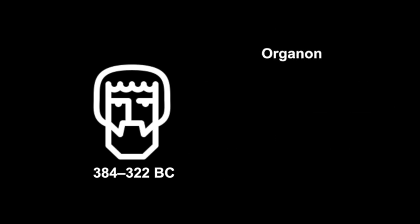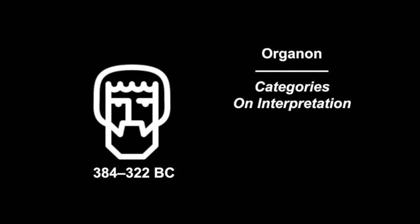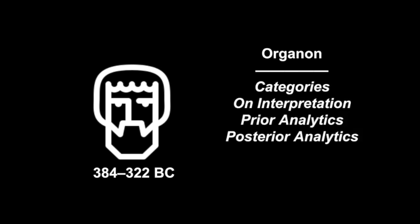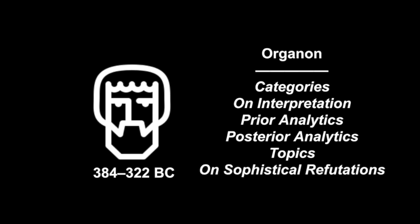The Organon is a collection of Aristotle's works that launch the field of logic, and it consists of six works. It starts off with the Categories, then On Interpretation, Prior Analytics, Posterior Analytics, Topics, and On Sophistical Refutations. Today we're just talking about the Categories.